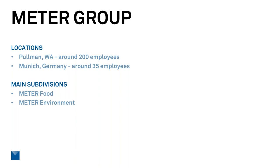At both of those locations we do engineering and manufacturing. We have about 200 employees in Pullman, about 35 in Munich, and there are two main subdivisions in the company: METER Food and METER Environment. METER Food focuses mainly on instrumentation for food measurements. METER Environment does both above ground and below ground instrumentation for measuring environmental variables.